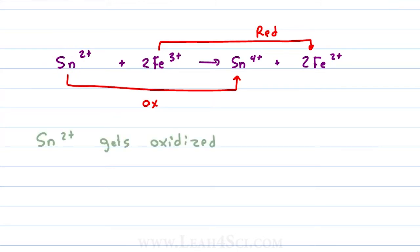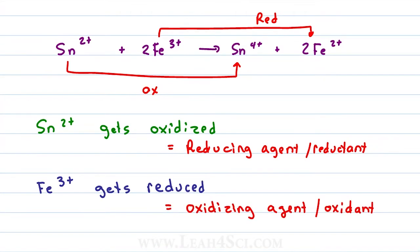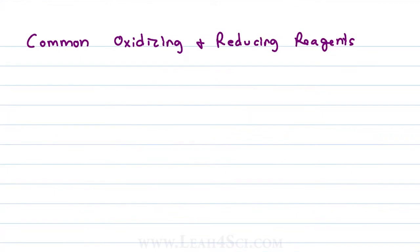This means that when Sn2+ gets oxidized, it acts as the reducing agent or the reductant. And when iron 3+ gets reduced, it acts as the oxidizing agent or the oxidant. We'll look at redox reactions in more detail in the next video, but first let's look at some common oxidizing and reducing reagents.